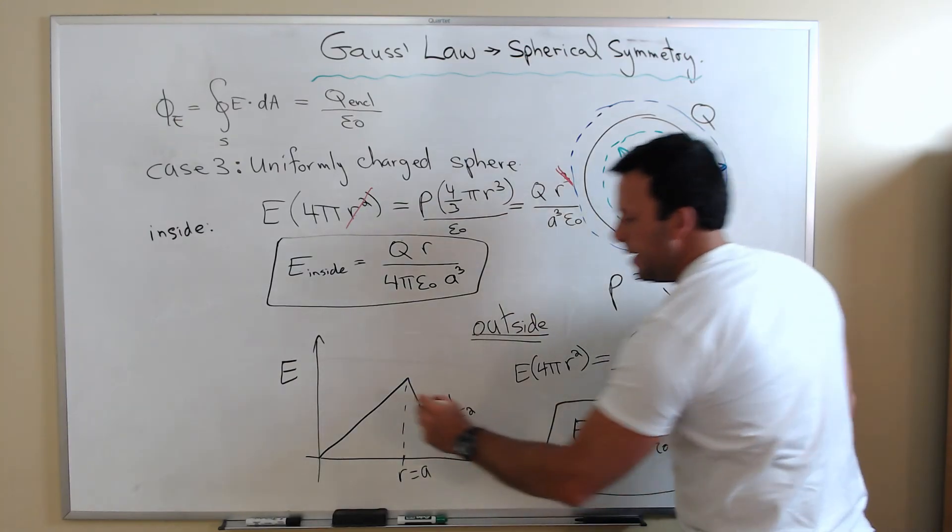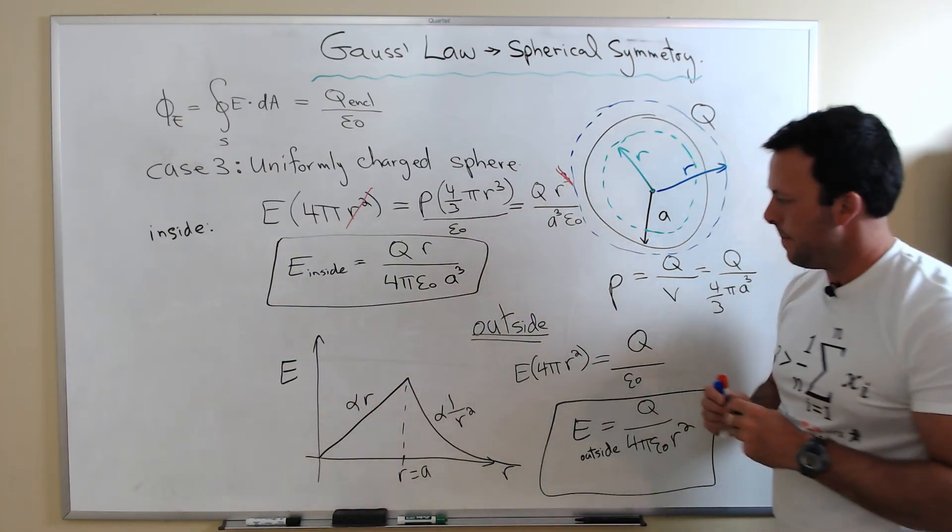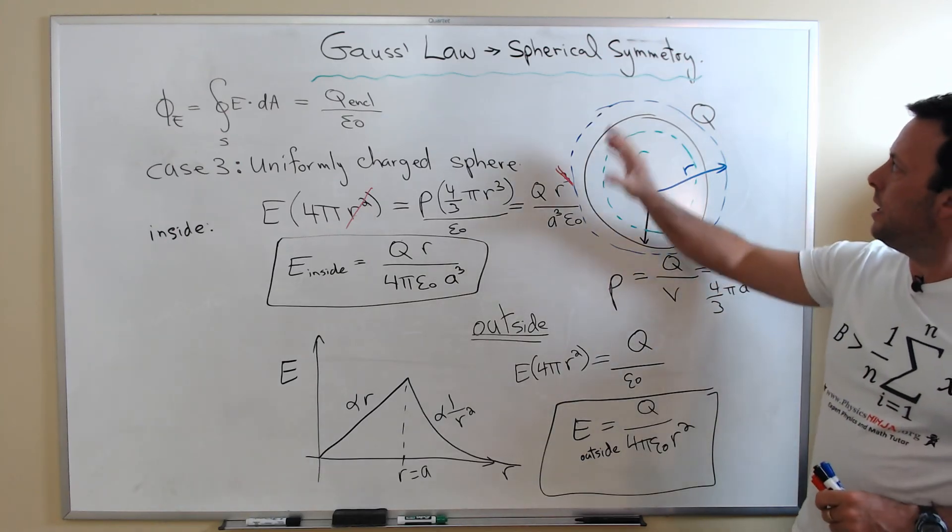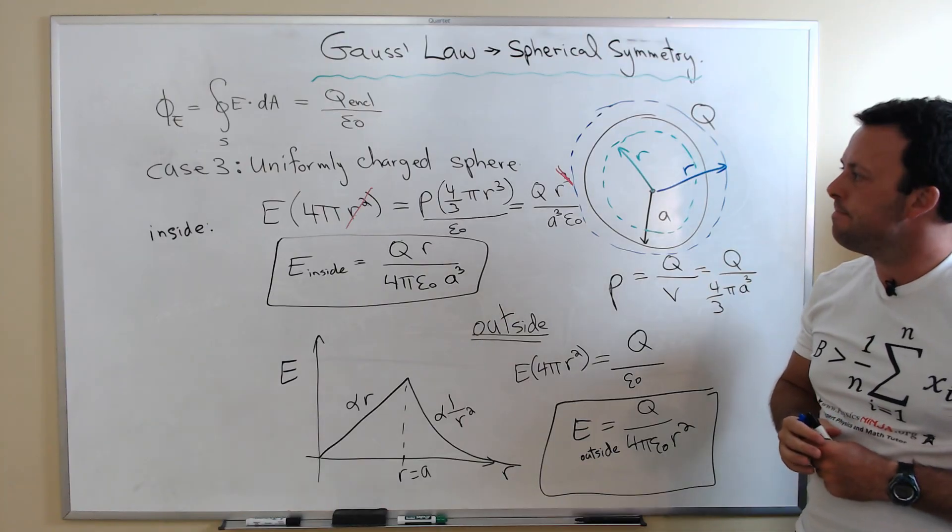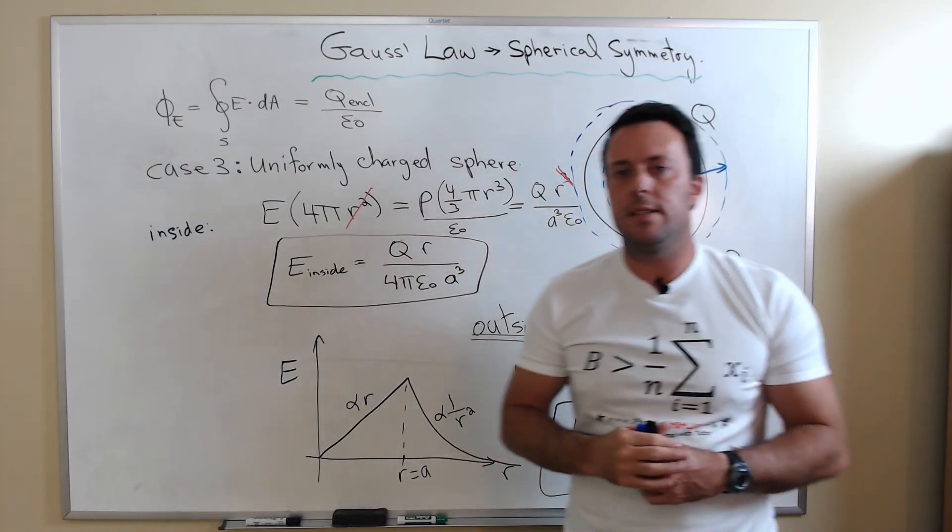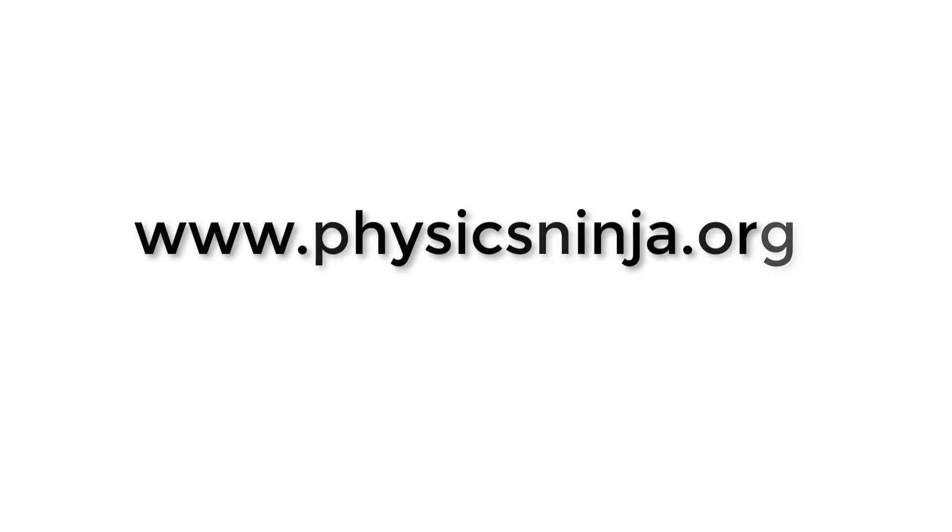When you're inside the sphere, the electric field is proportional to R. Applying Gauss's law to spherically symmetric objects is pretty straightforward. If you have any questions, don't hesitate to ask or leave a comment. Or it can be reached by email. Thank you. PhysicsNinja.org